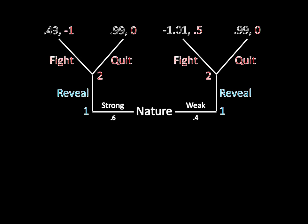We can do backward induction here. If we're in the top left corner because Player 1 has revealed himself to be strong, she is going to fight because negative 1 is better than 0. And if we're in the top right corner because Player 1 has revealed himself to be weak, then we have a payoff of 0.5 for fight and a payoff of 0 for quit, so she'll fight under that circumstance.